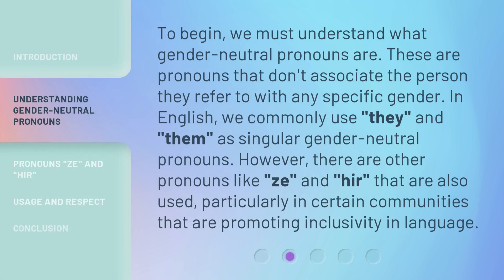To begin, we must understand what gender-neutral pronouns are. These are pronouns that don't associate the person they refer to with any specific gender. In English, we commonly use 'they' and 'them' as singular gender-neutral pronouns. However, there are other pronouns like Ze and Hir that are also used, particularly in certain communities that are promoting inclusivity in language.